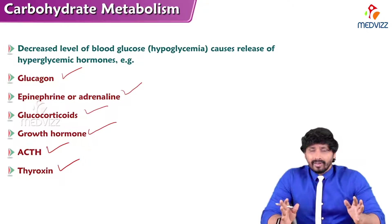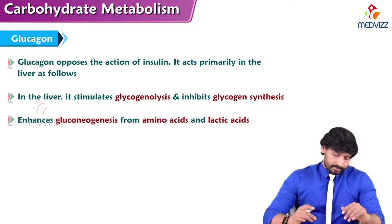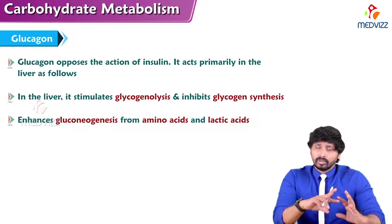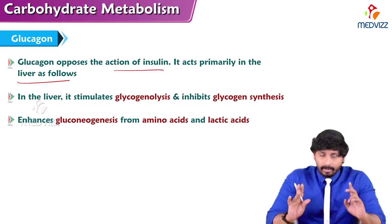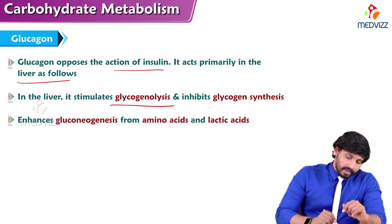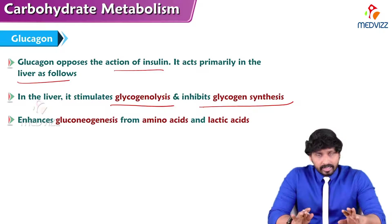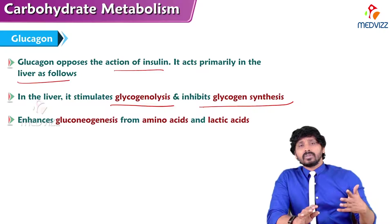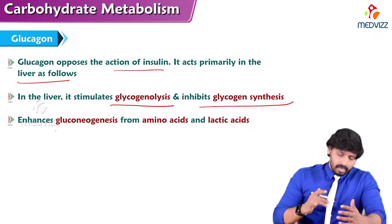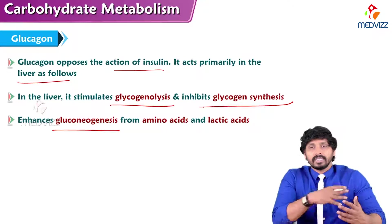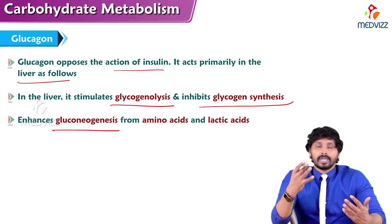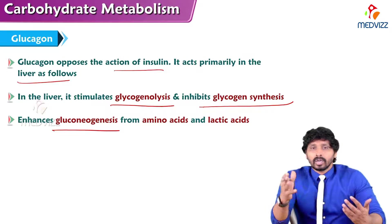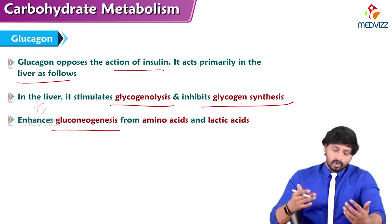Glucagon and insulin are antagonists. Glucagon opposes the action of insulin and acts primarily on the liver. It stimulates glycogenolysis and inhibits glycogen synthesis — whatever glycogen is stored must be broken down to form free glucose. Glucagon also enhances gluconeogenesis from non-carbohydrate sources such as pyruvate, lactate, glycerol, and non-essential amino acids like alanine, aspartic acid, and glutamate — all of which can form glucose.